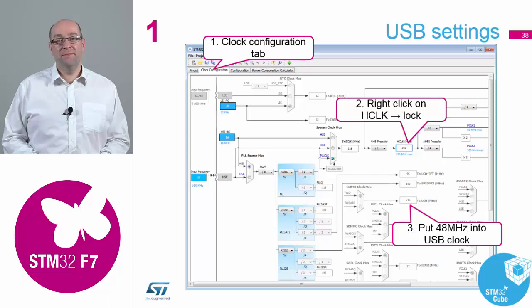Go back to your main clock, right-click on that and tell it to lock that frequency in place. Right-click on the H clock that you typed 192 megahertz in earlier, and lock it. Then go down to where your USB is, type in 48 and hit enter. It will change the PLLs only for that part of the path so that you get your 48 megahertz for your USB. It might take a while to think about it.